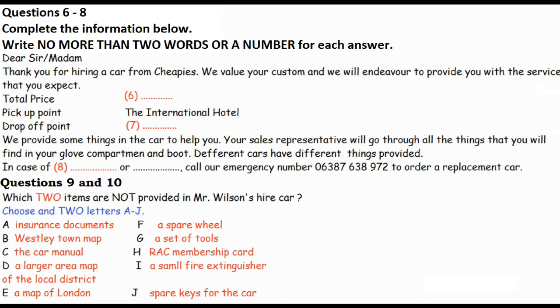In the boot, you'll find a spare wheel and a set of tools in case you have a problem. We have membership with the RAC, so you can call them if you're really in trouble. The membership card and phone number is in the glove compartment too. There will be a small fire extinguisher under the passenger seat, but I hope you won't have to use that. Great. So, where do I pay? If you go over there to Mr Walker, then he'll sort you out.